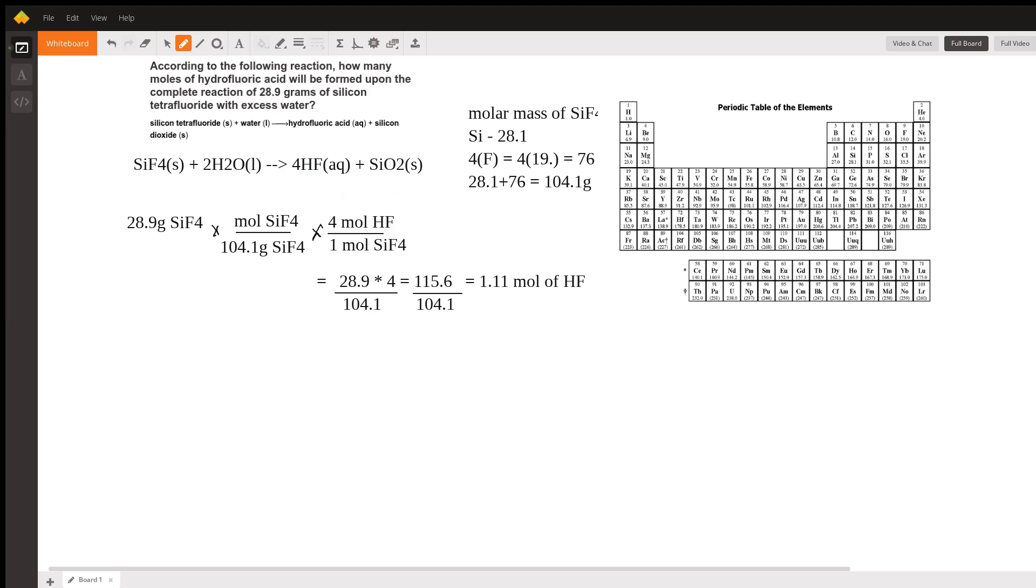To find how much of our product we're going to make—moles of hydrofluoric acid—we need to know which is going to be our limiting reactant. The problem tells us we're reacting 28.9 grams of silicon tetrafluoride with excess water. If H2O is excess, then we know that SiF4 is our limiting reactant.